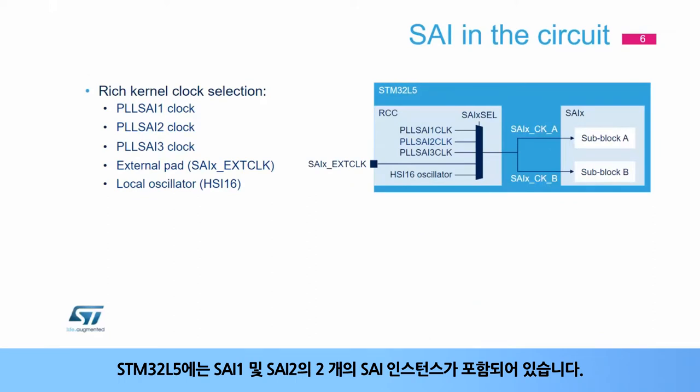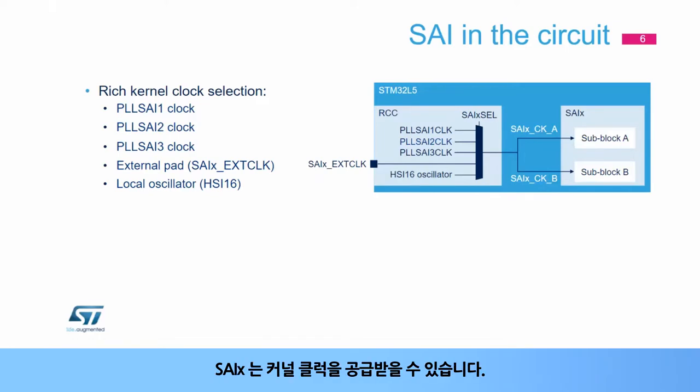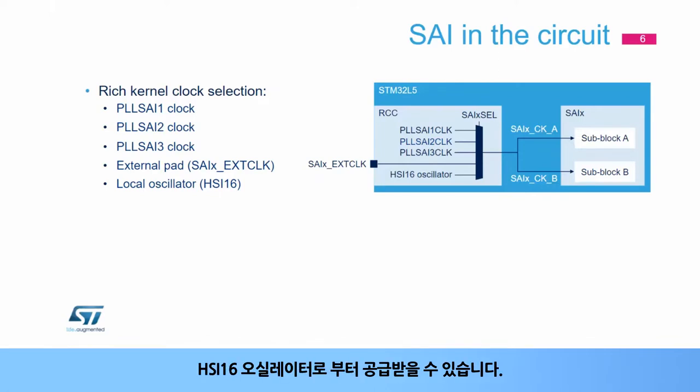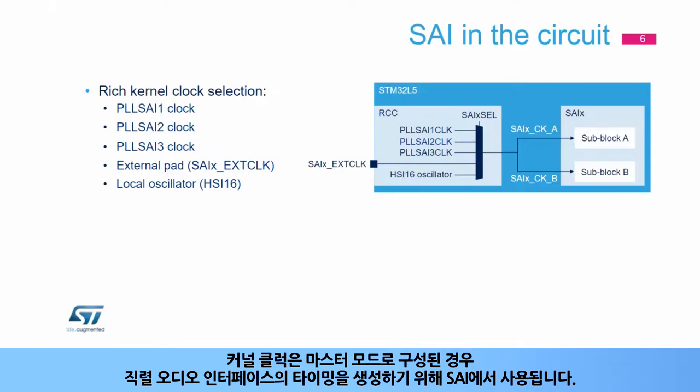The STM32L5 embeds two SAI instances, SAI1 and SAI2. SAIX can receive a kernel clock from each PLL, from HSI16 oscillators, from an input pad (SAIX_EX_TCLK). The kernel clock is used by the SAI in order to generate the timing of the serial audio interface when configured in master mode.